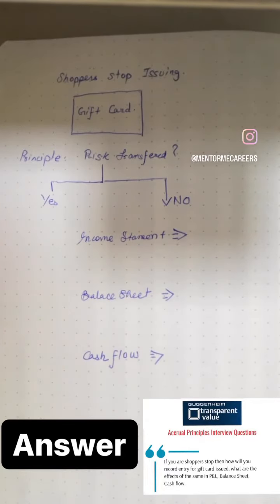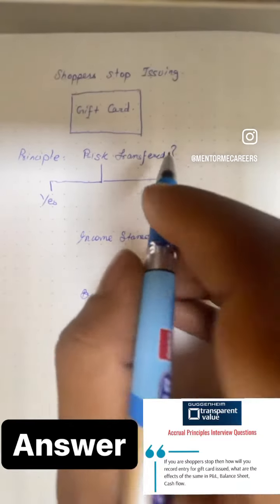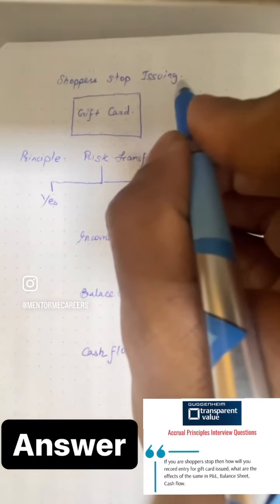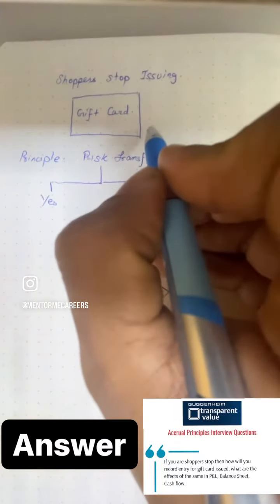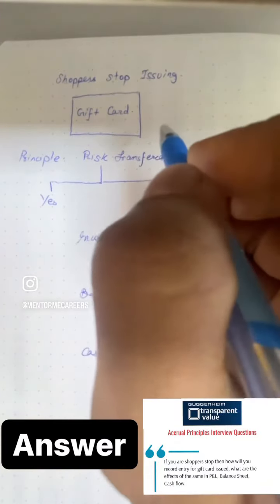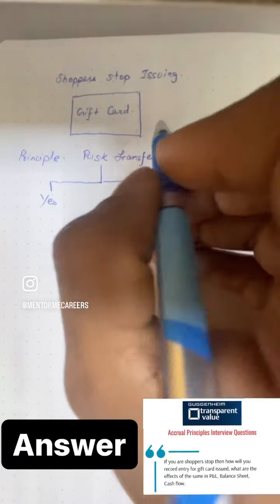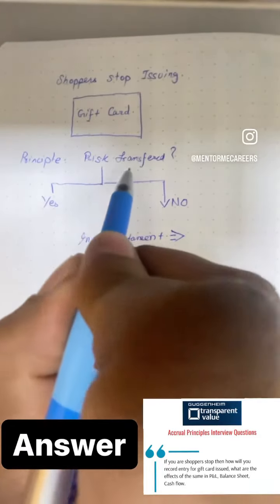So yesterday I asked a question related to accruals in which the accounting principles were getting tested, and the example that we're taking was that Shopper's Top was actually issuing gift cards. So what happens in that case? You can just put yourself in this situation and assume — first, what is the principle that we are talking about?